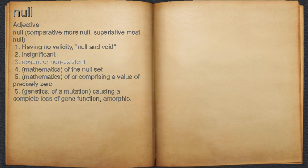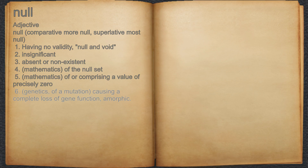3. Absent or non-existent. 4. Mathematics: of the null set. 5. Mathematics: of or comprising the value of precisely zero. 6. Genetics: of a mutation, causing a complete loss of gene function; amorphic.